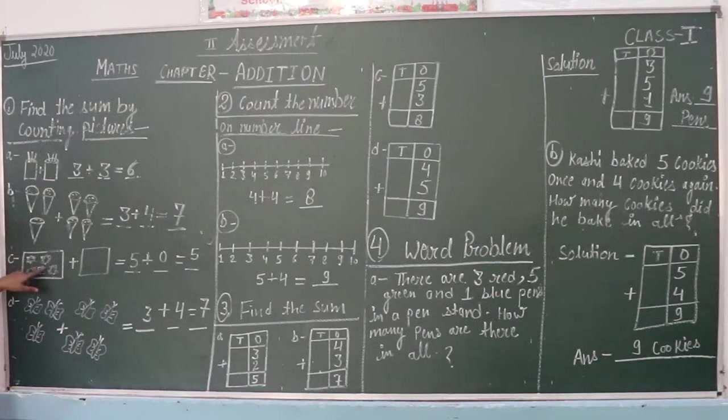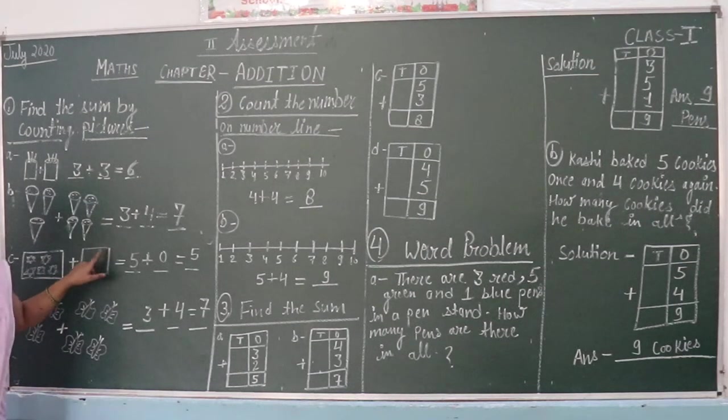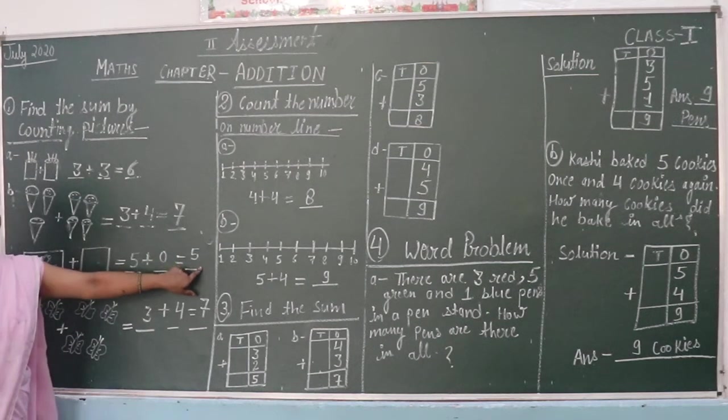1, 2, 3, 4, 5. 5 is the answer. It means there is nothing, 0. 5 plus 0 is equal to 5.